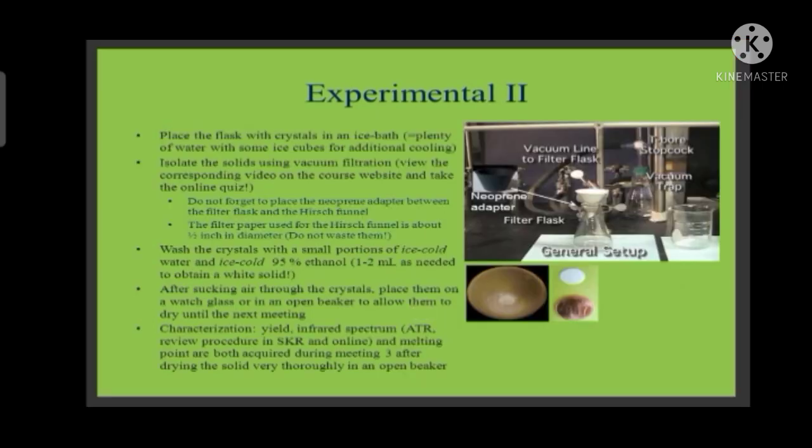After that we will place the flask with crystal in an ice bath. The ice bath should contain plenty of water with some ice cubes for additional cooling. Then isolate the solids using vacuum filtration. After that, wash the crystals with a small portion of ice cold water and ice cold 95% ethanol. Then after sucking air through the crystals, place them on a watch glass or in an open beaker to allow them to dry until the next meeting. After drying you will get your crystal, that is the benzoin crystal. After that you can calculate the yield or you can calculate the melting point or whatever you want.